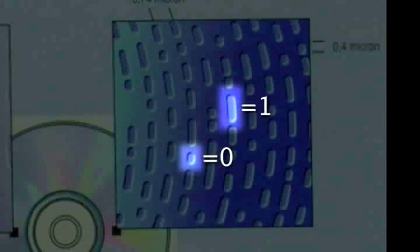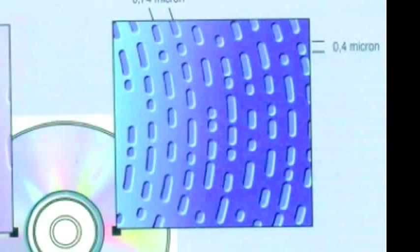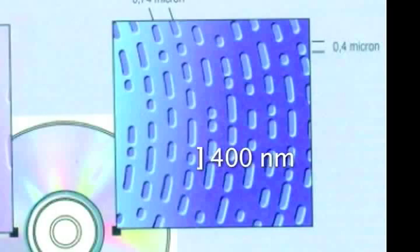These are already actually nanoscale features, or close to it. The length of a groove in a DVD is something like 400 nanometers — 0.4 microns. The density of information you can store on those discs has gotten phenomenally high. The latest generation is called Blu-ray, and a single Blu-ray disc can store something like the equivalent of an entire floor of one library — a phenomenal change.